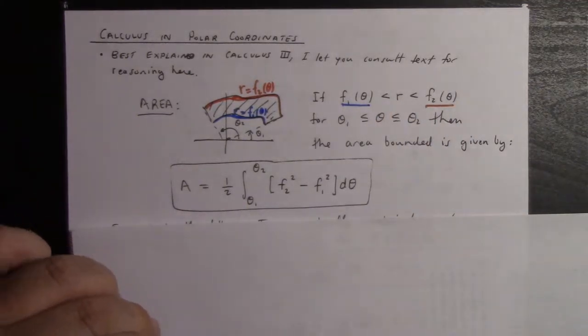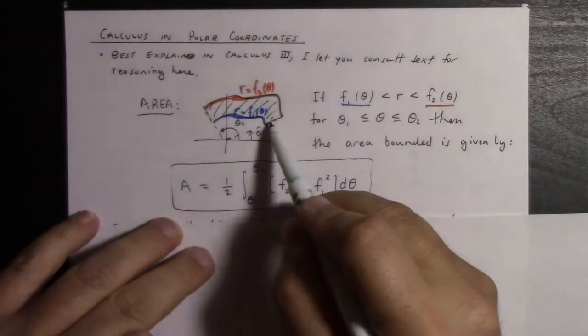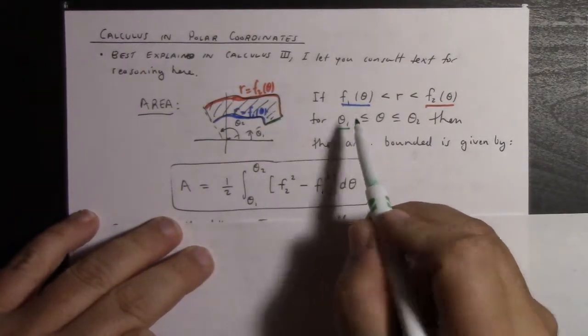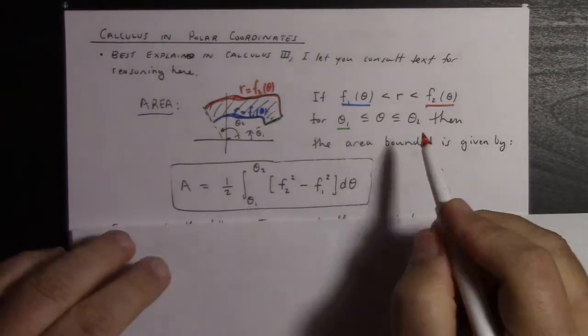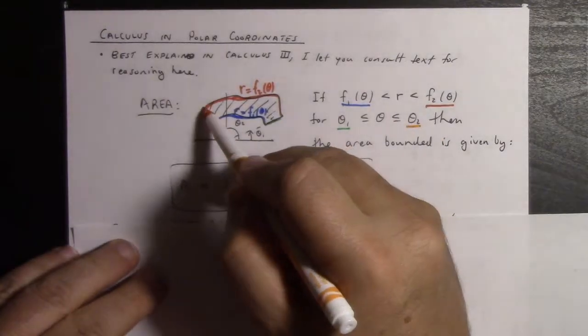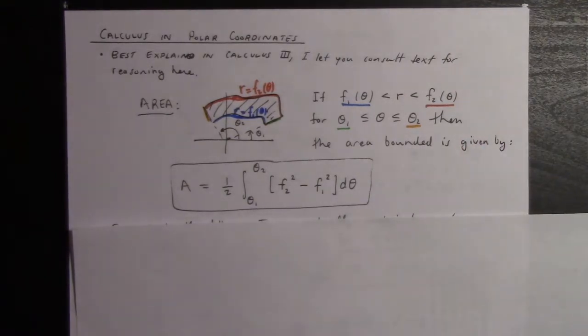So my inner radius, my outer radius, and also we've got θ₁ and θ₂ defined like so. Then we can calculate the area of such a region by taking one-half the integral from θ₁ to θ₂ of r_out² minus r_in² dθ.